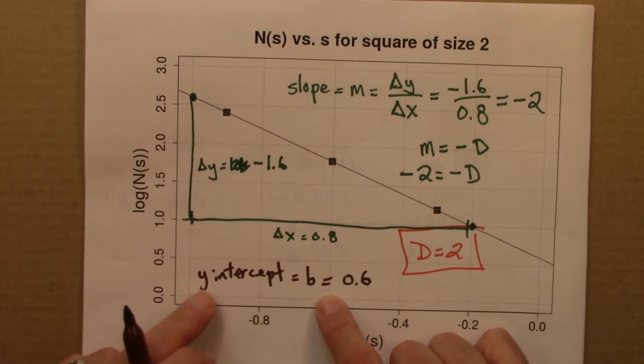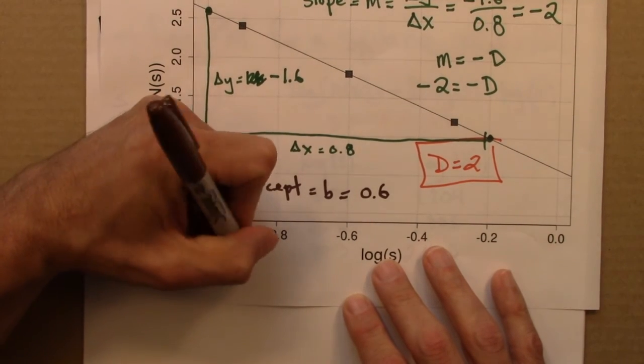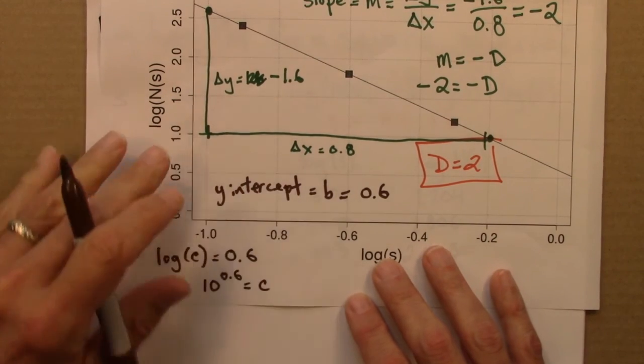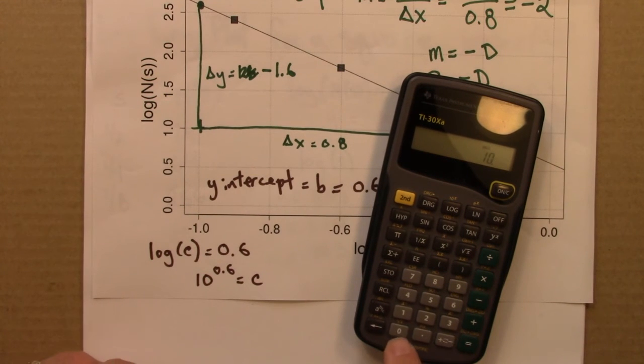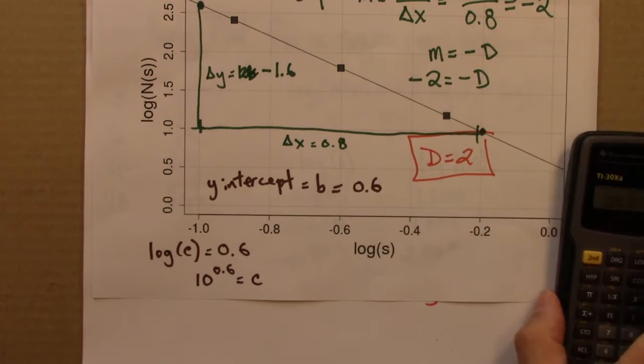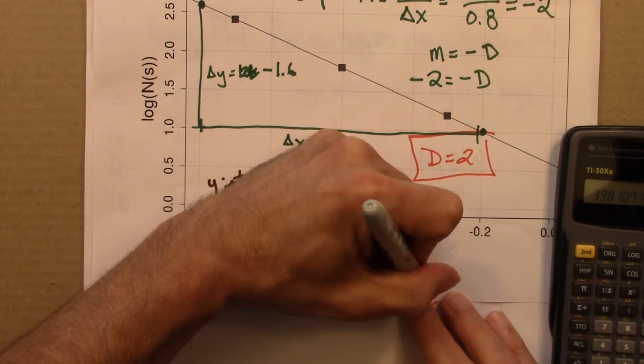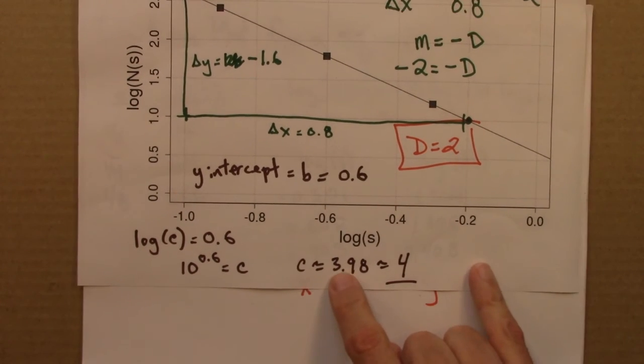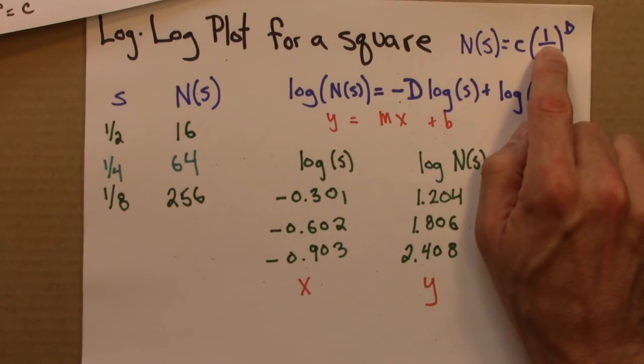And if you're using a spreadsheet or a statistics program, the program will probably tell you this as well. So b is 0.6, log of c is 0.6. And what does that mean? That means 10 to the 0.6 is c. So let's evaluate that. 10 to the 0.6 is 3.98. And that's approximately 4. This turns out to be not exactly 0.6, and so this turns out to actually be 4. So let's think about what that means. Let's go back here, just finish this up.